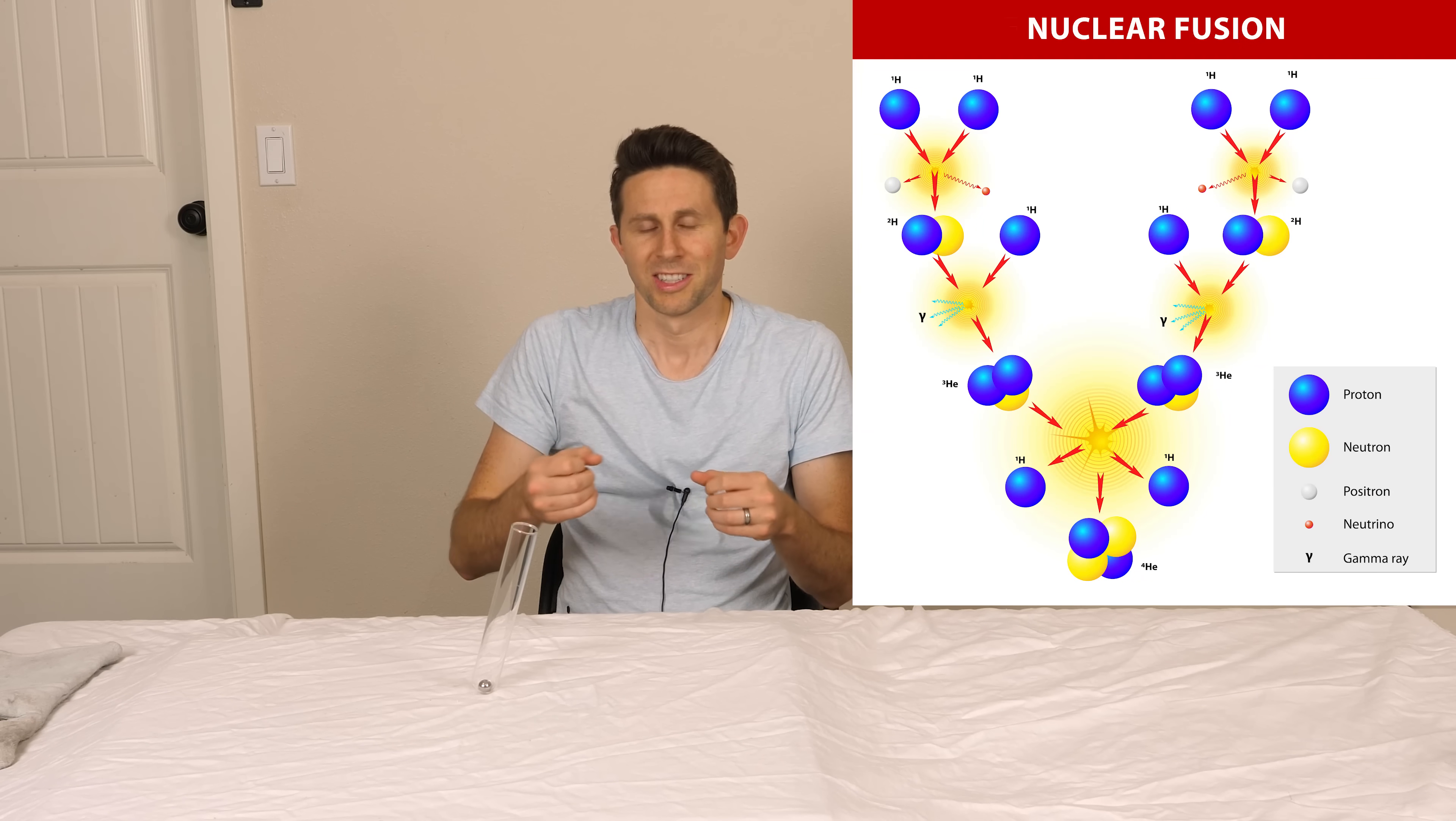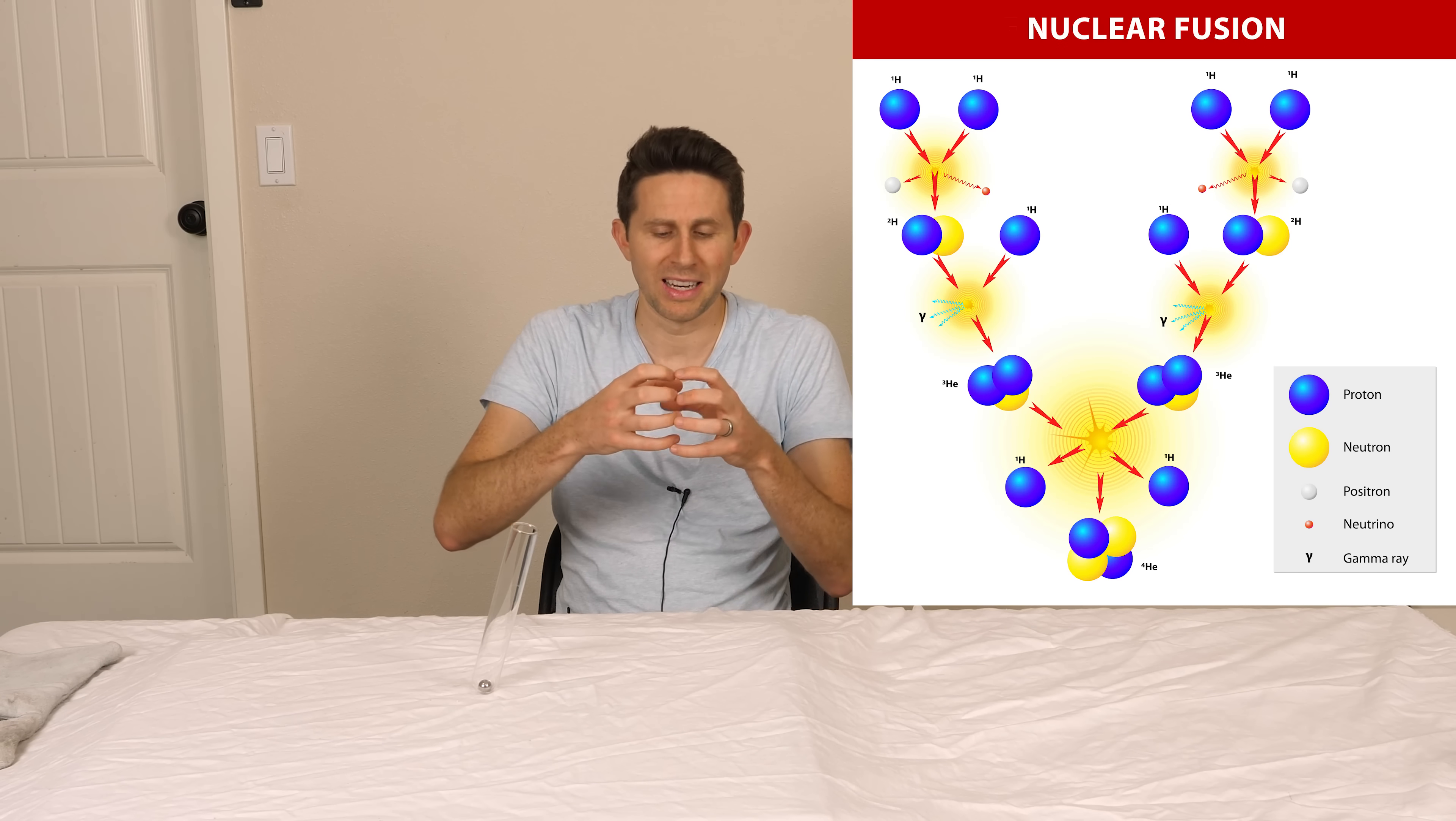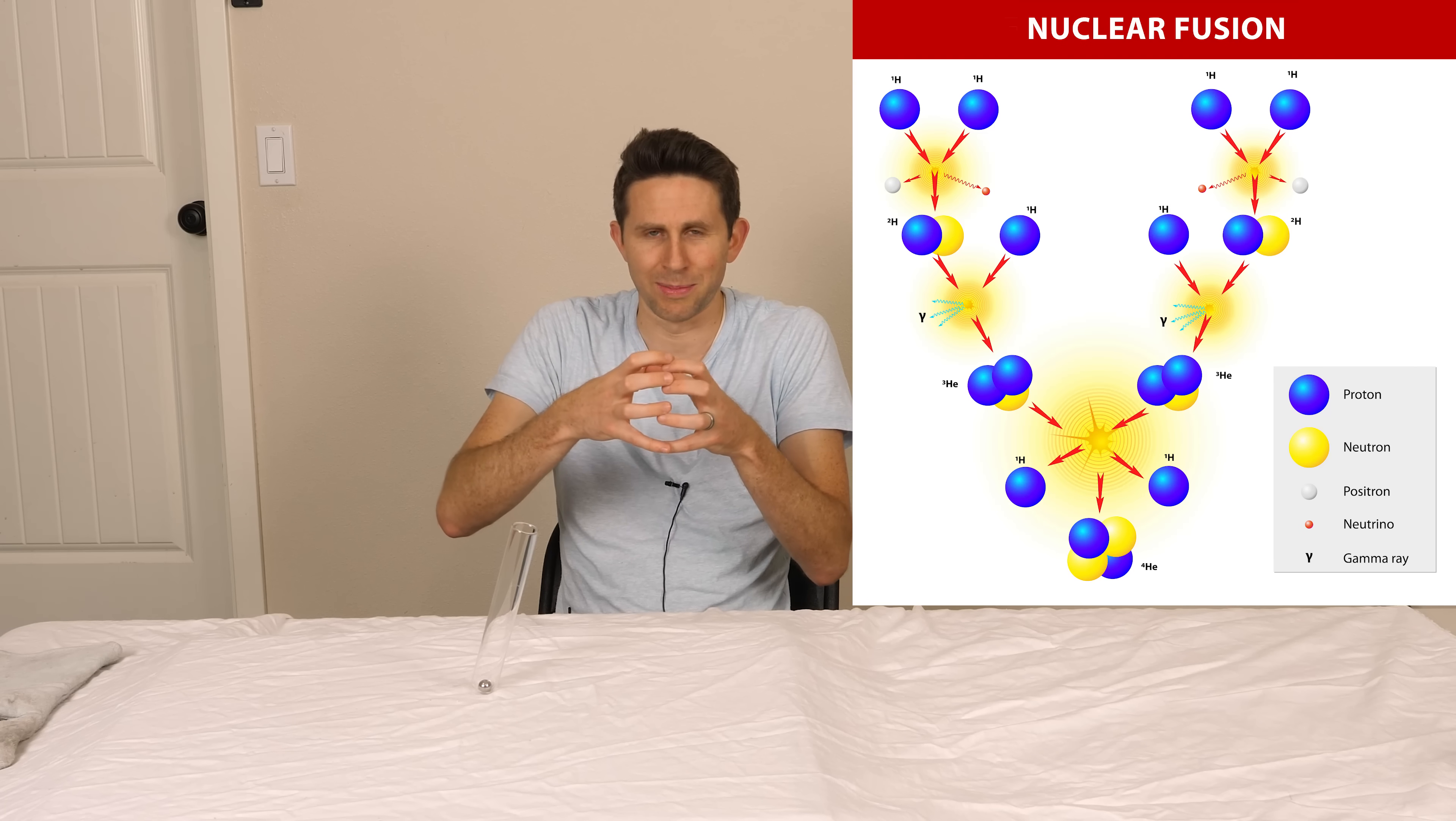But the reason our sun doesn't just collapse in on itself is because there's another force that's pushing it apart. That force is due to the explosion that's constantly happening in the sun due to nuclear fusion. Hydrogen is constantly forming into helium and it's exploding the sun. So this exploding force is pushing it out and gravity is pushing it in.